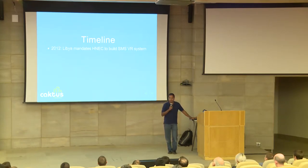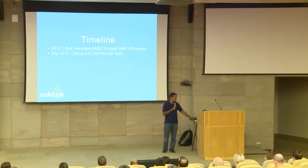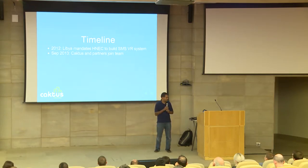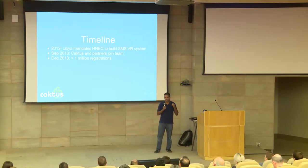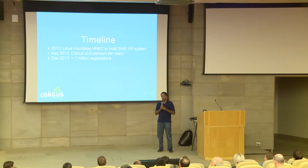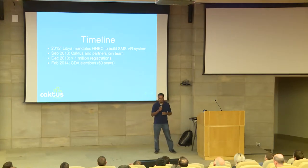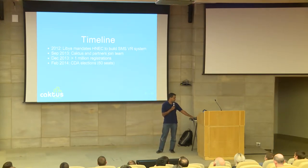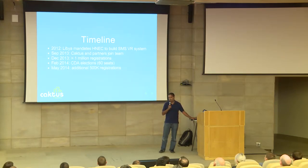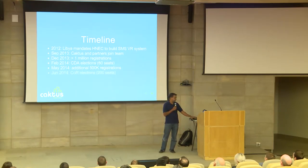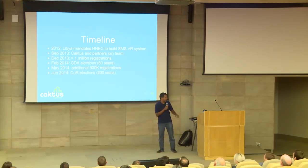Briefly, the timeline was relatively compressed. In 2012 Libya made that mandate. In September 2013, Cactus joined the team along with partners including Precelt. In December 2013 we launched the tool — December 1st registration started, throughout the month 1 million people registered, and December 31st was the last day of registrations. In February they had their first elections. We had another registration period in May where another 500,000 people registered for a total of 1.5 million, and finally had their big elections in June where 200 people were elected.